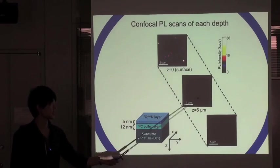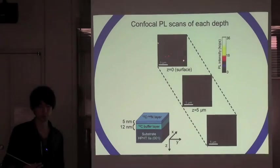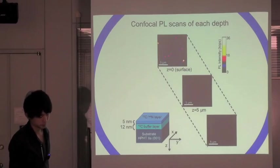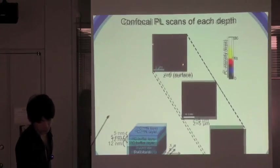The bright spots appear only in surface region. These were dark, which means there is no NV minus center on the substrate.